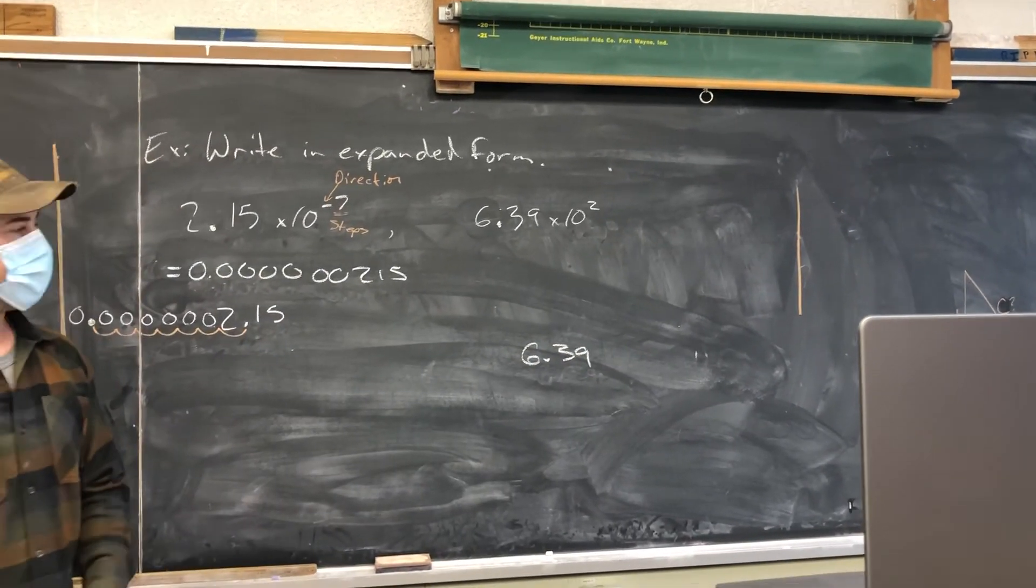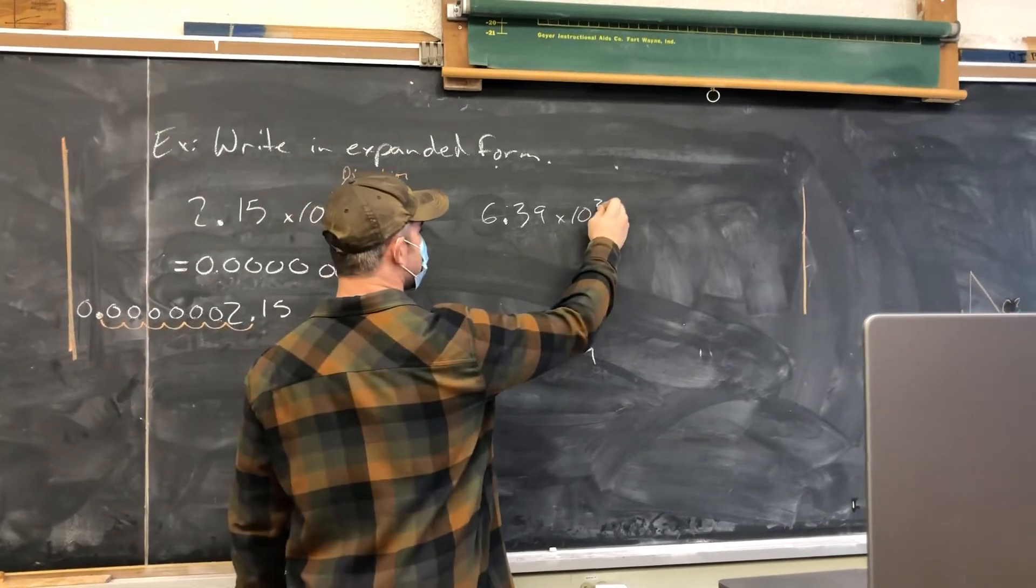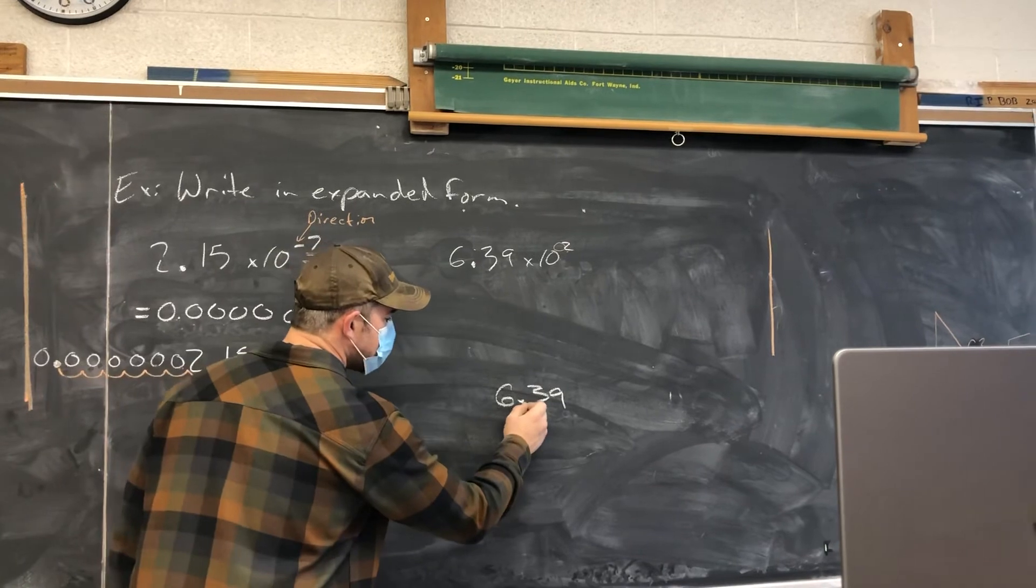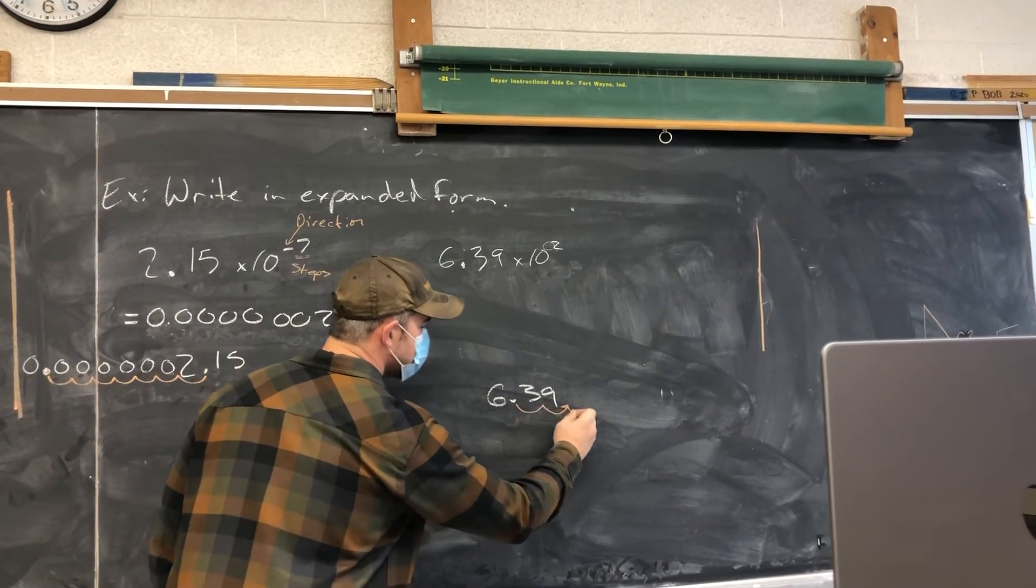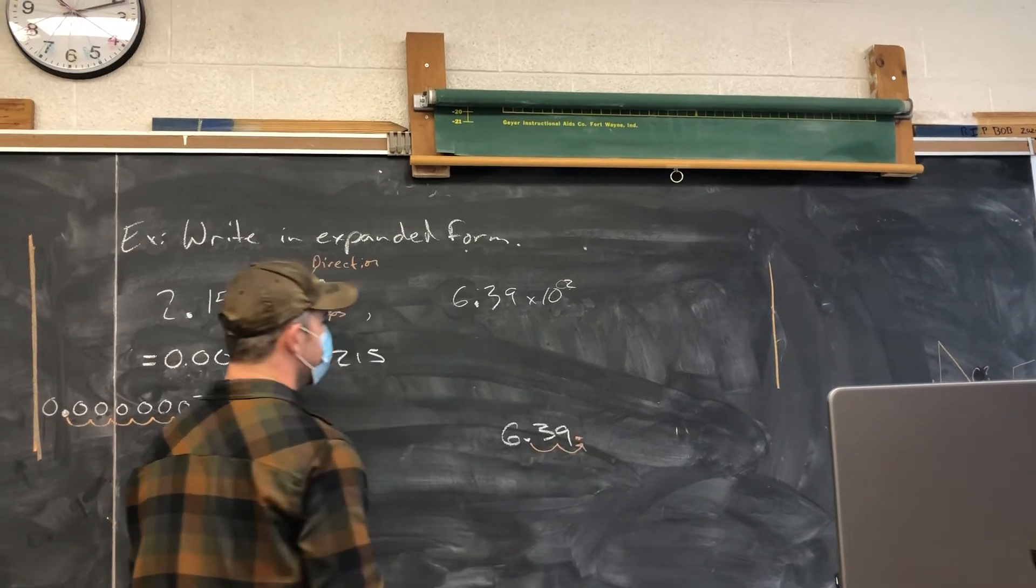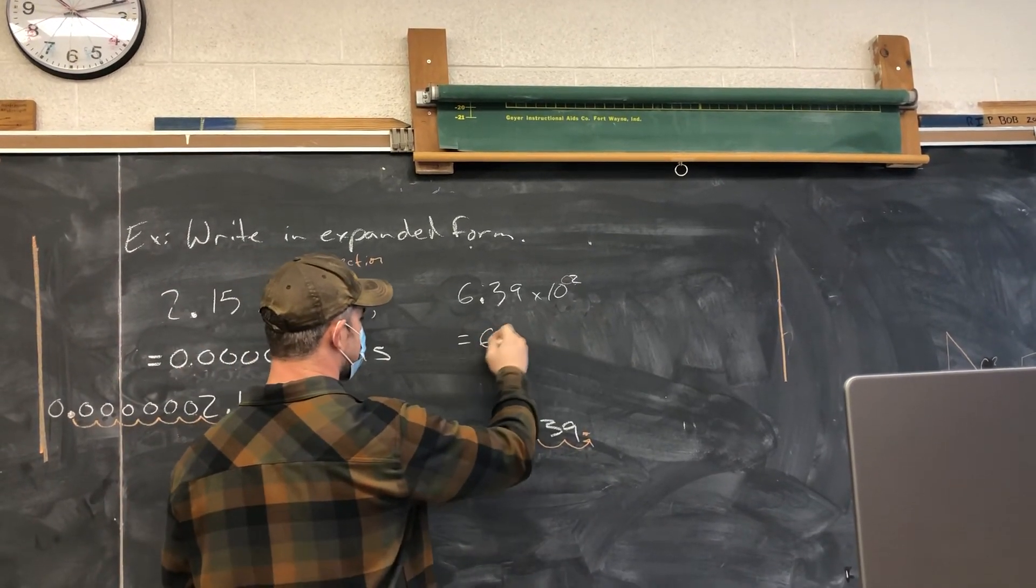And now I know my number of steps is two, and because there's no sign, it tells me my direction is positive. So positive is going to make the number larger, and I'll move it two to the right. So this will leave me with a decimal place just after the nine, or a final number of 639.